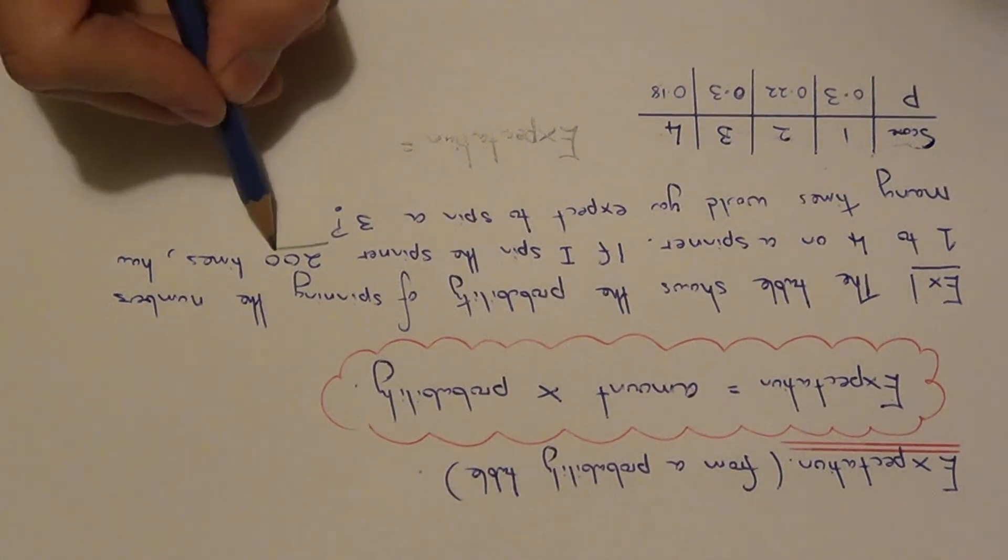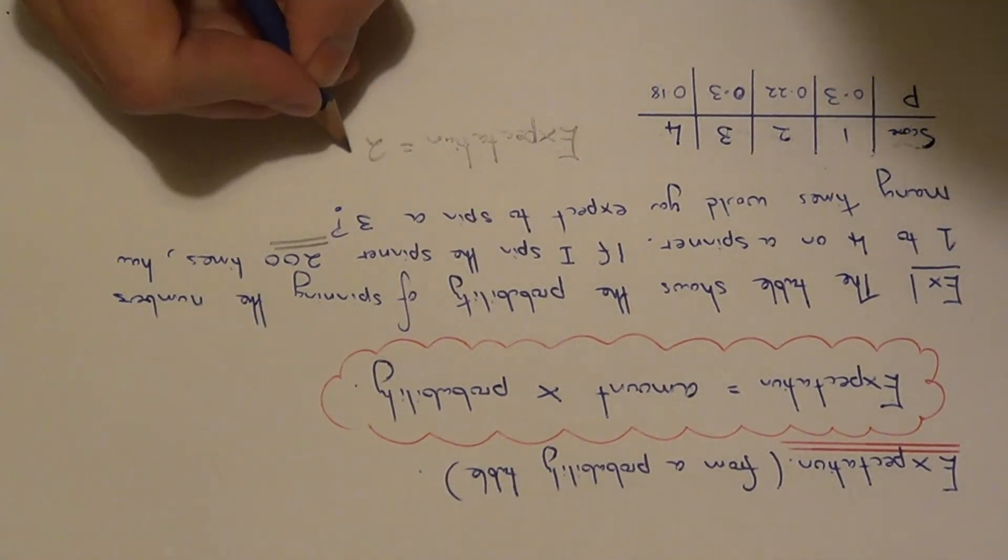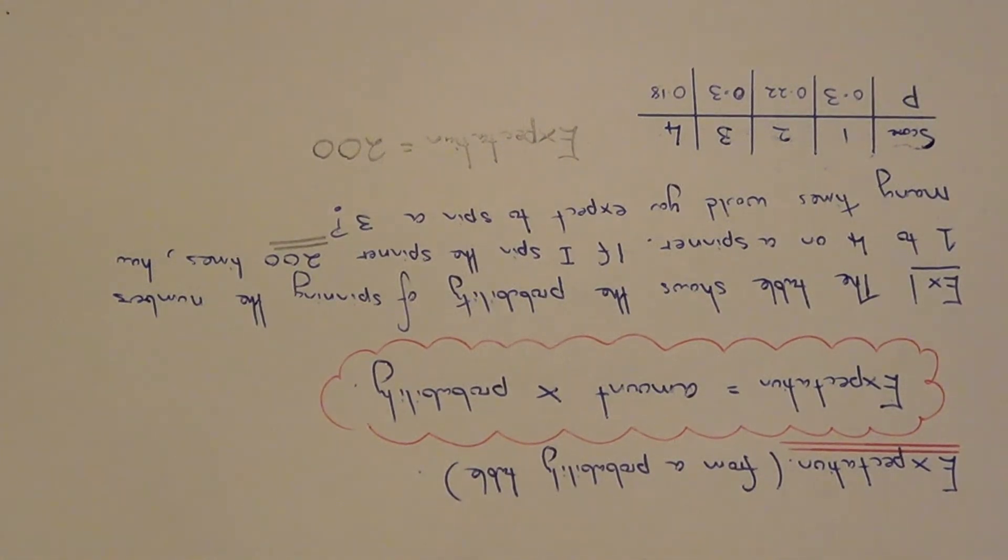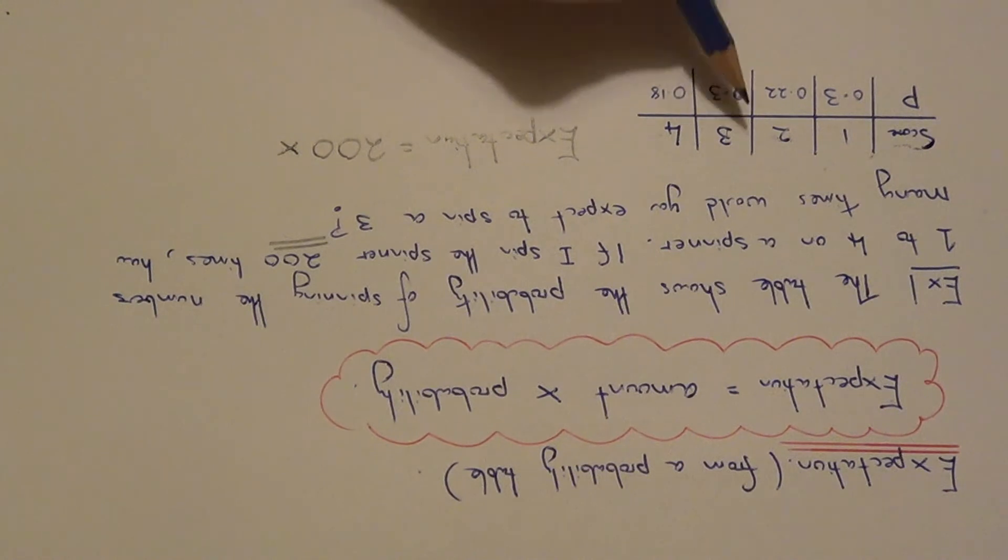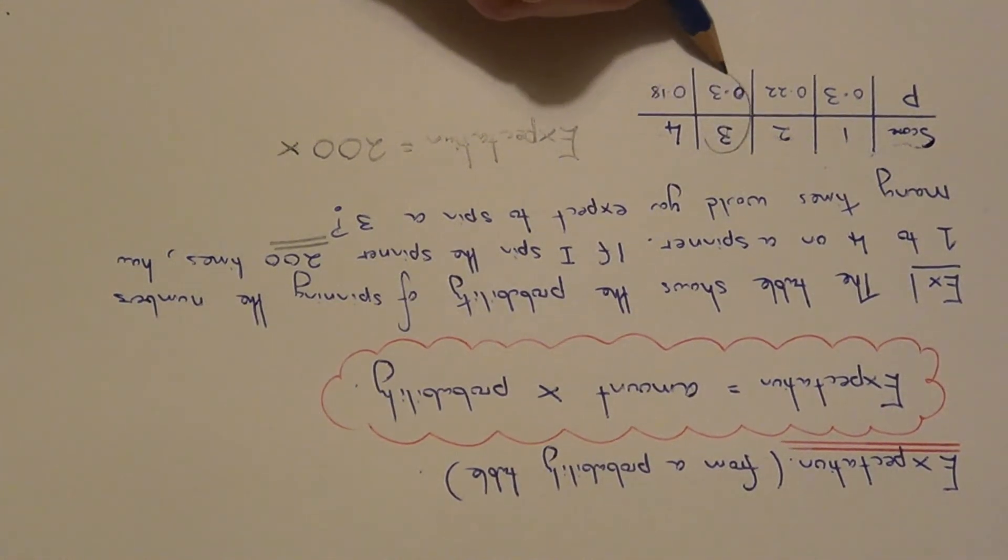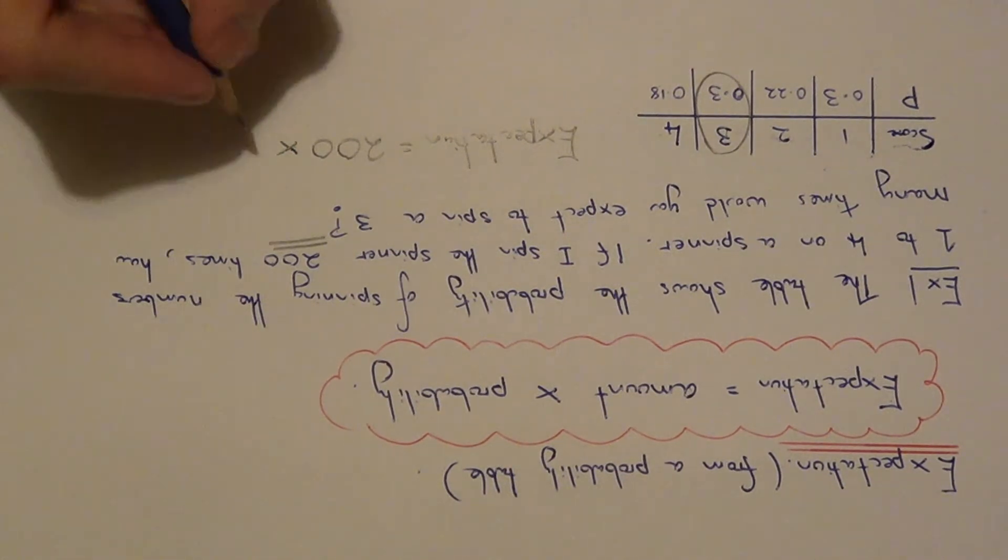The amount of times we are spinning the spinner is 200. So we need to do 200 and times that by the probability of spinning a 3. If we just look at our table, for a score of 3 the probability is 0.3.